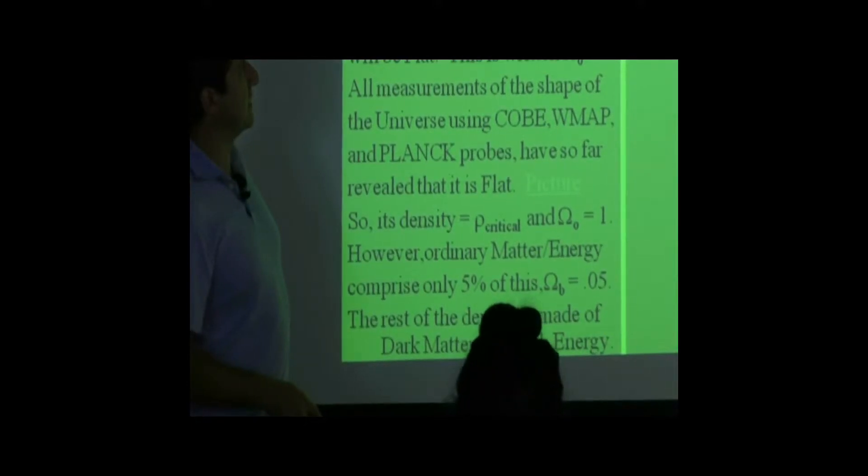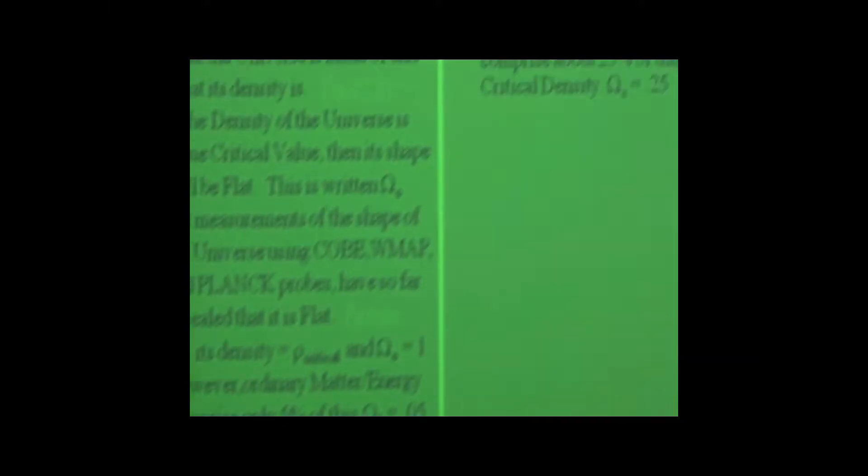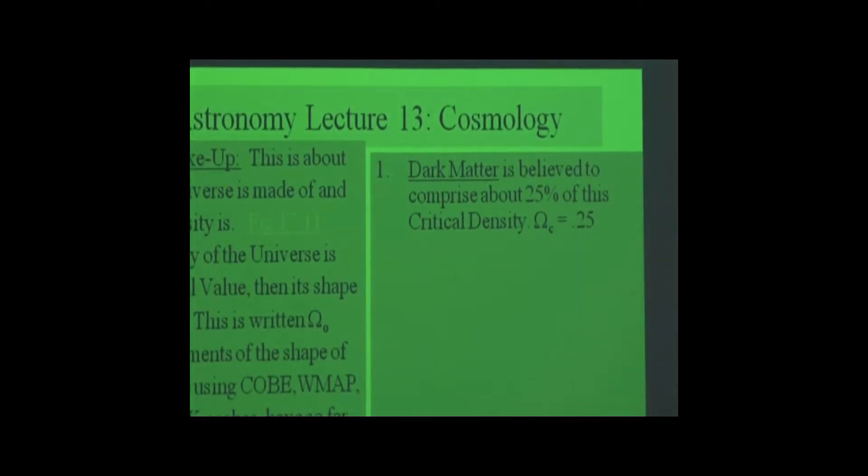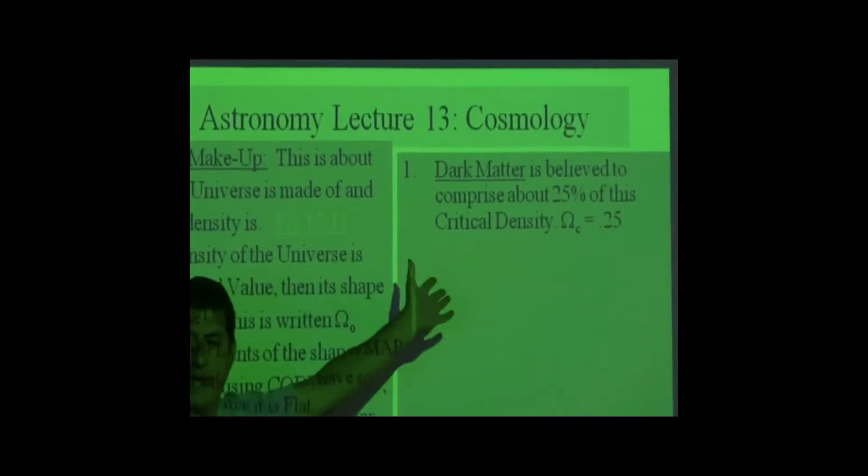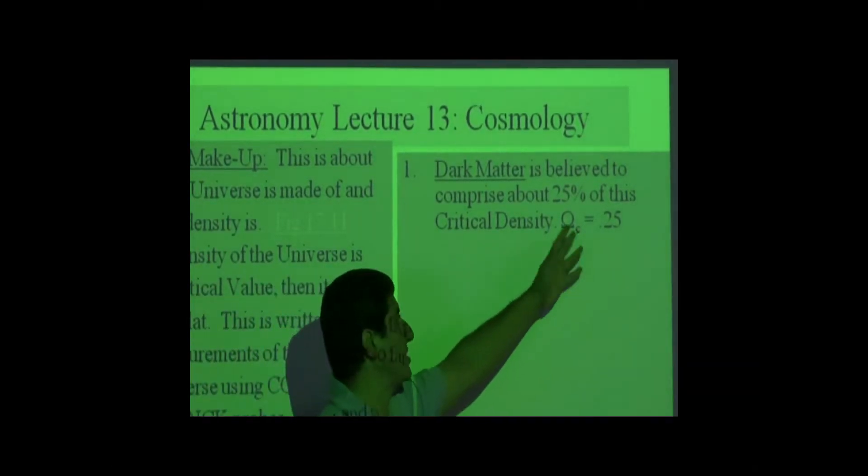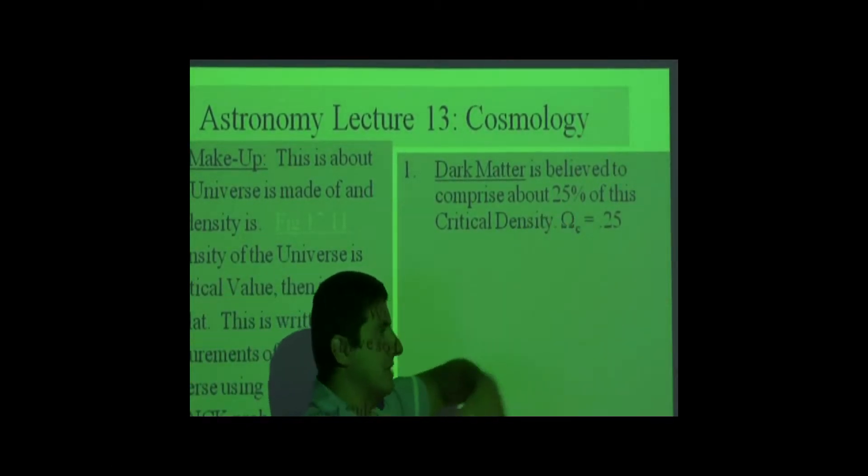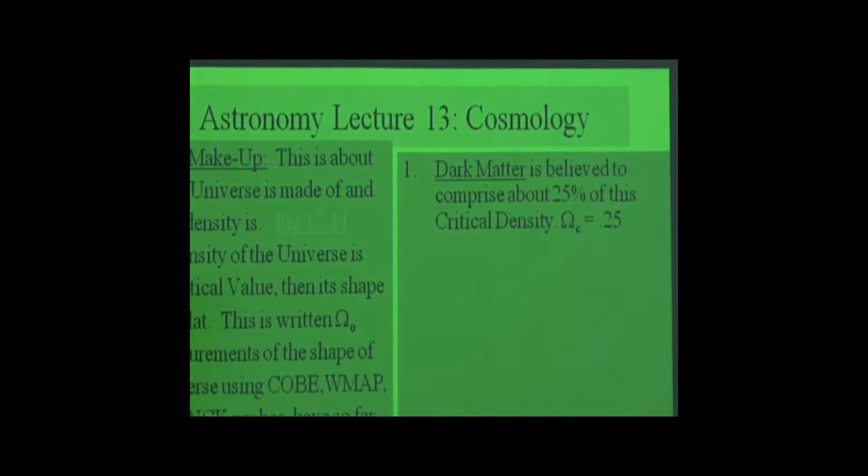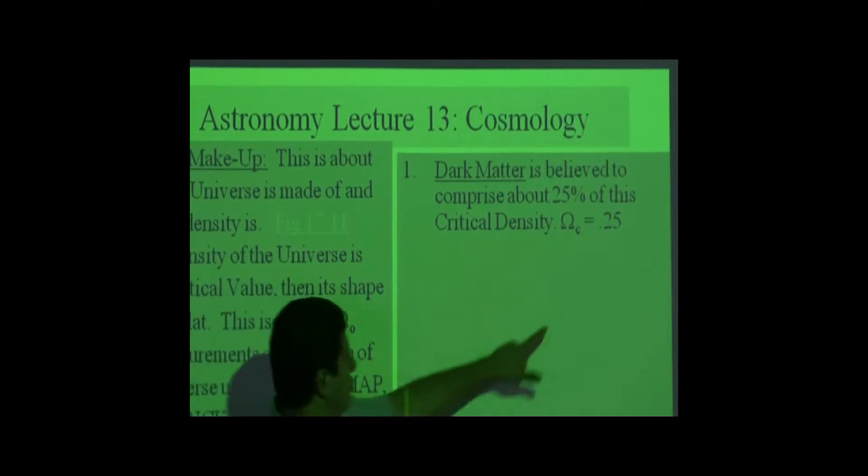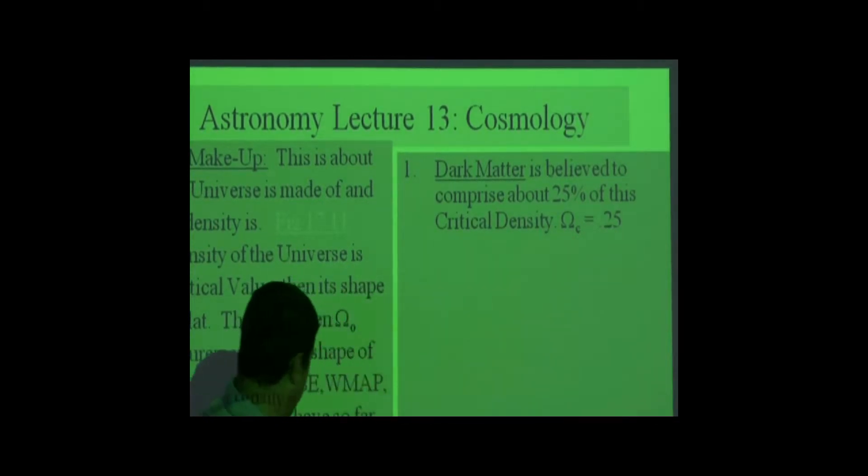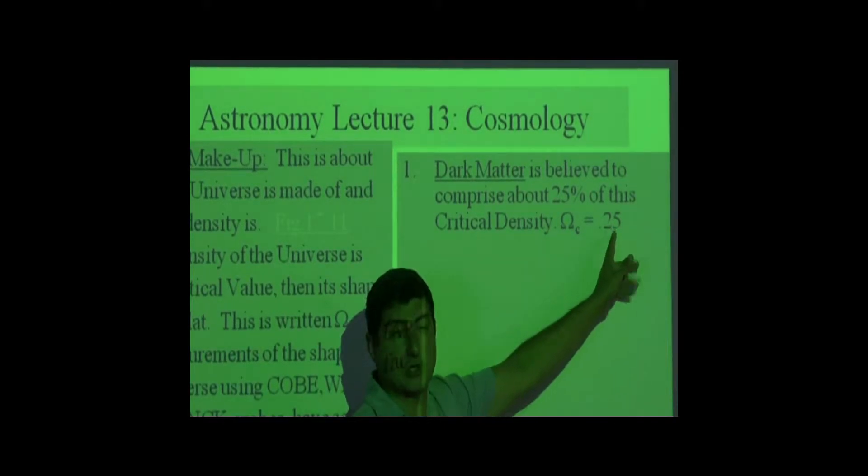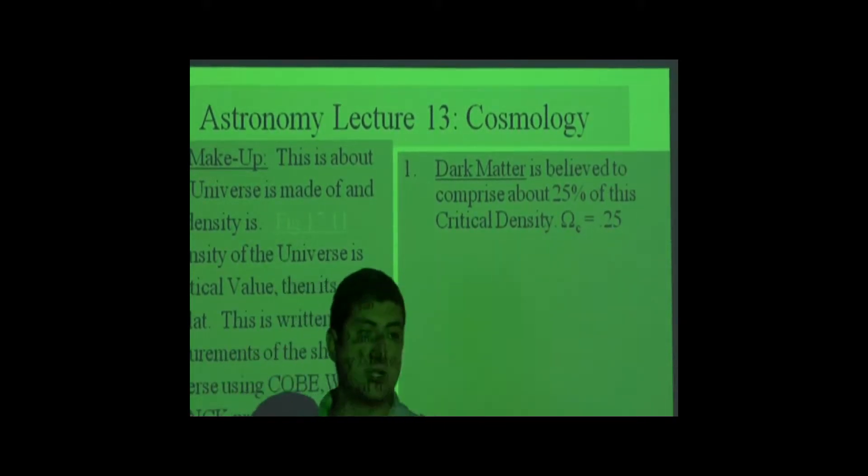Dark matter is believed to comprise roughly about 25% of this critical density. Some pages said 20%, some pages said 21%, 22%, but I'm just roughly estimating here 25%. So if you add 5% to 25%, 0.05 to 0.25, that makes 30%, right? So the rest of the stuff of the universe is the dark energy.